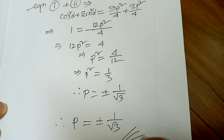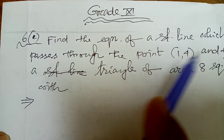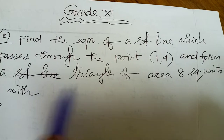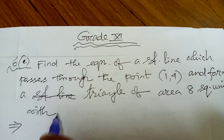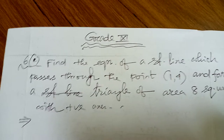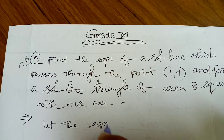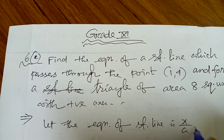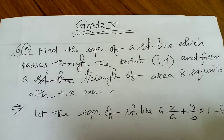Solving finished. Now look at question number 6c: find the equation of the straight line which passes through the point (1, 4) and forms a triangle of area 8 square units with the positive axes. Let the equation of the straight line be x/a + y/b = 1 — this is equation number 1.